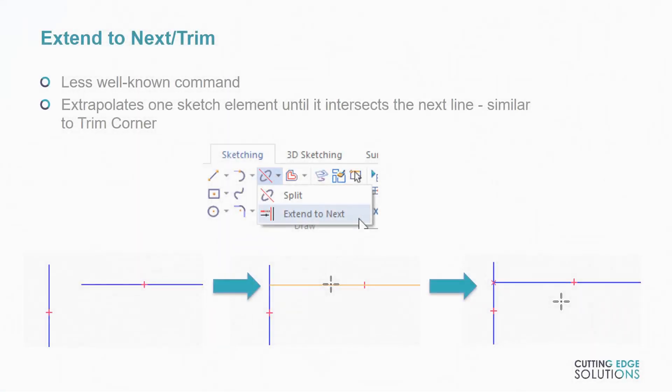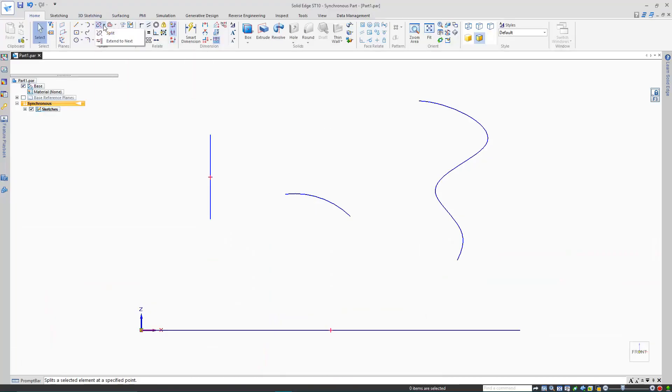Here are some sketch commands you might not already know, starting with the cousin of the trim corner command, the extend to next. This can be found under the drop down menu from the split command, and very simply extrapolates one line until it intersects another line. If you use this on a curve element, it creates a tangent straight line from the end you specify until it meets another line. It also auto-generates a connect constraint, where it meets this line. So if I have a sketch element I need to extend simply, and I don't want to play around with sketch relationships, I can use this command to achieve a closed intersection between the sketch lines, just like this.